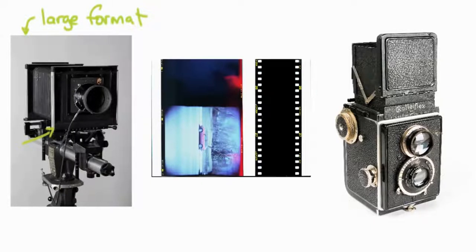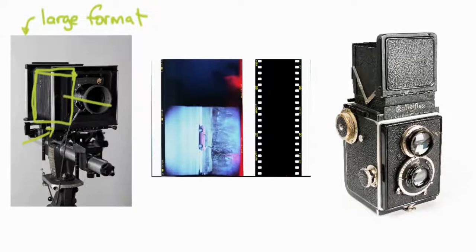Not every large format camera looks exactly like this, but a large format camera has a large piece of film in the back — about the size of a pretty good-sized book. The light goes through the lens, lands on the film, and you've got a picture.